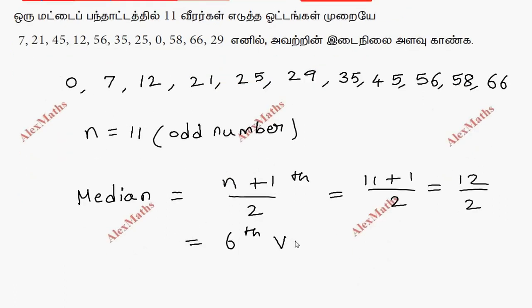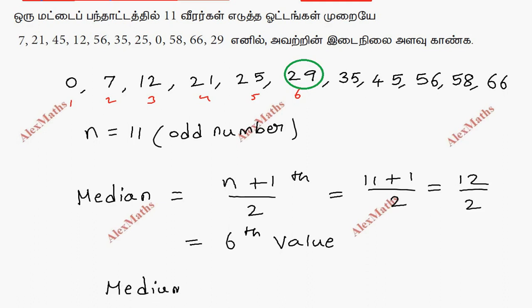The 6th value in the ordered data: 1st, 2nd, 3rd, 4th, 5th, 6th. The 6th value is 29. So the median equals the 6th value, which is 29.